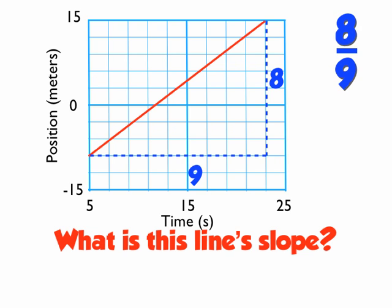Looks great — except it's wrong. The reason why it's wrong is because each block doesn't have a value of 1. They have different values; each block is worth more than 1, or less than 1. So let's figure out how to find the value for each block first, and then find the slope.